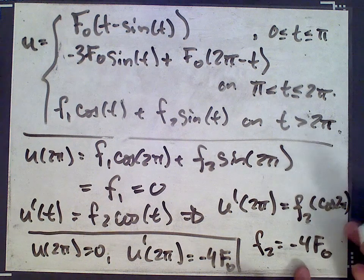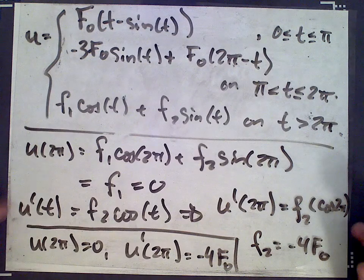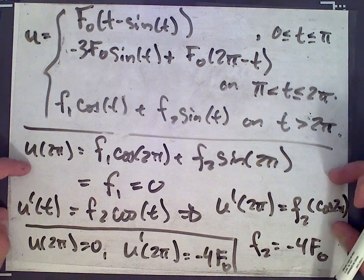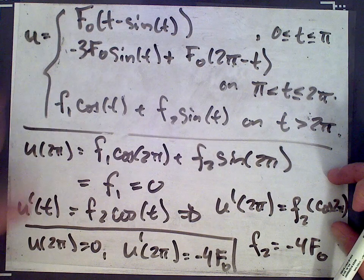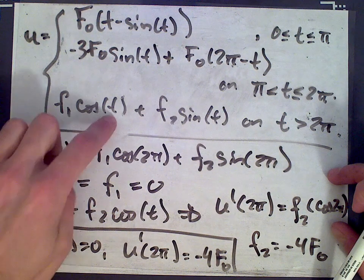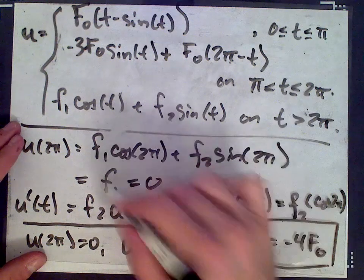So again, we got negative 4 f0 by plugging in the endpoint of the second formula, and we're solving for the initial conditions or the initial point on this interval by plugging 2π into this formula and its derivative, giving us this equation here, along with this one.